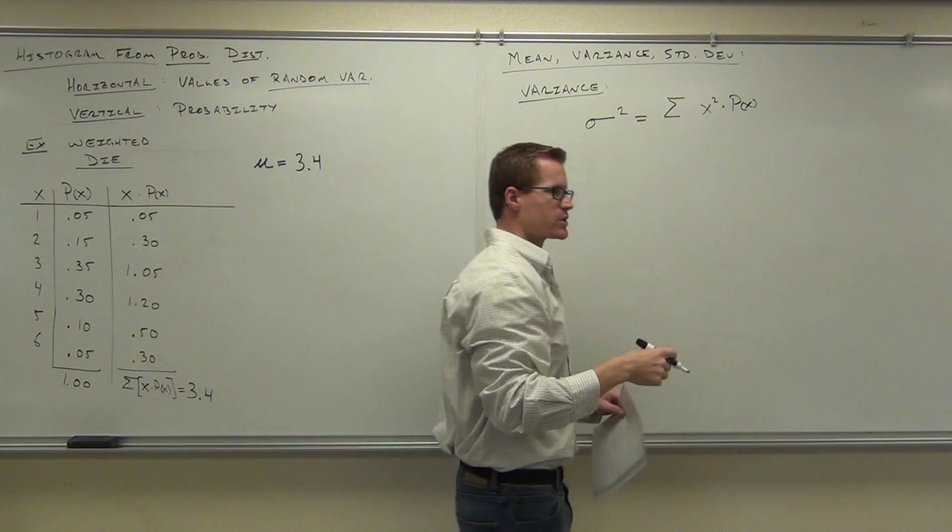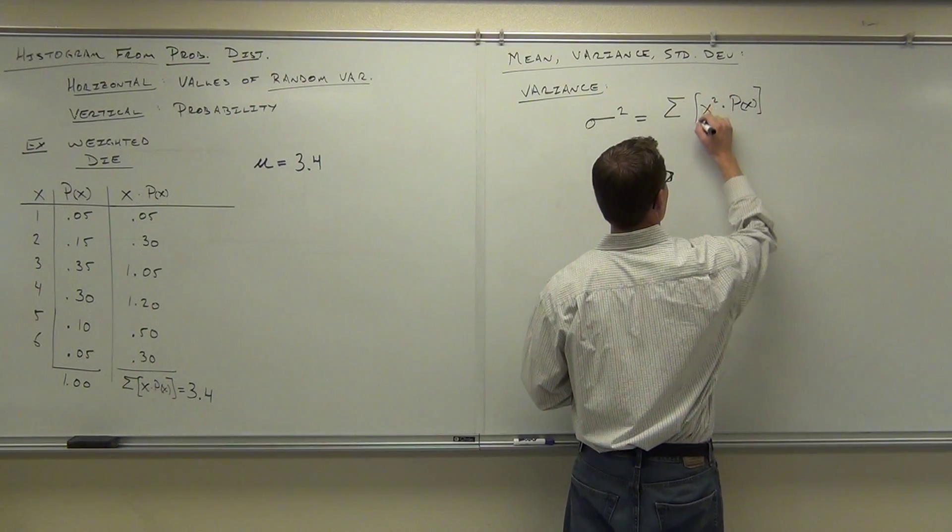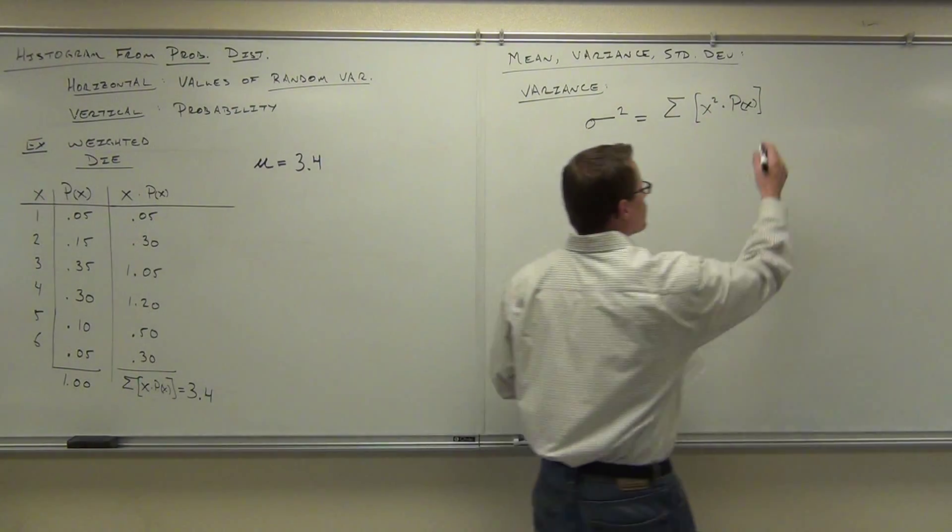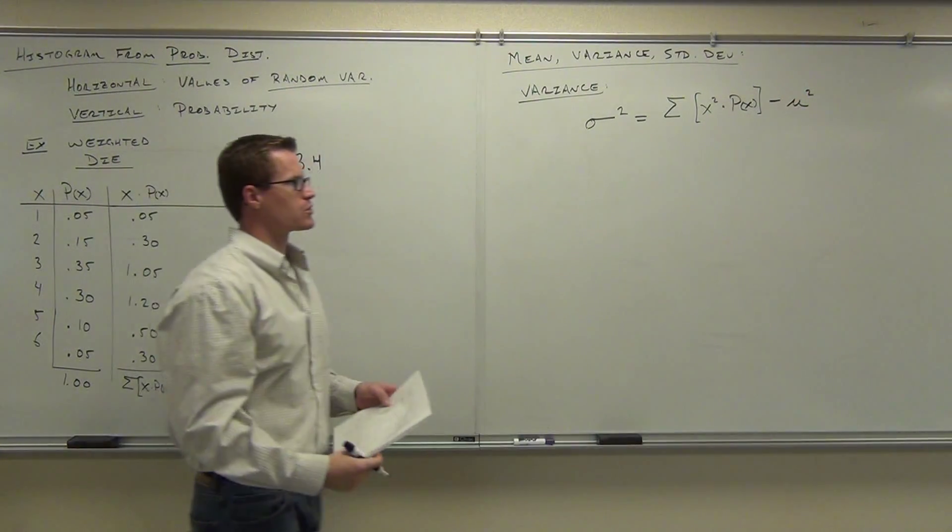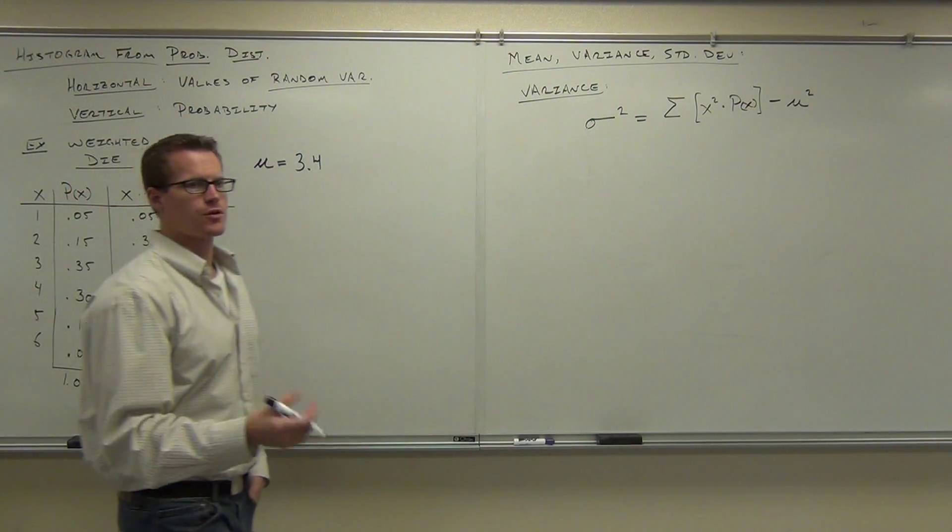Instead of any frequency, we have probability. And then to find the distance from our mean, we have to subtract the mean. We're just going to do the mean squared though. Subtract the mean squared. That's our formula for the variance.